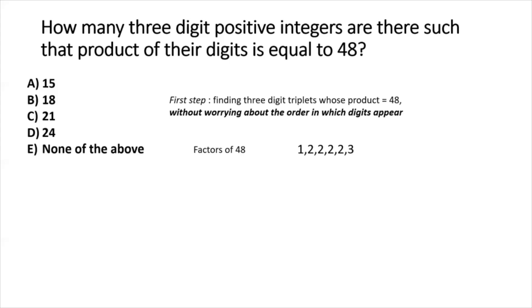Starting with 1 as one of the digits, we could take three 2s to make 8 as another digit, leaving 2 and 3 whose product is 6. So the triplet is {1, 8, 6}. This is the only valid triplet that includes 1, because if we tried four 2s, their product would be 16, which exceeds 9.